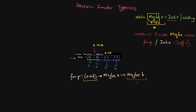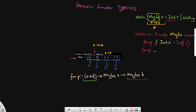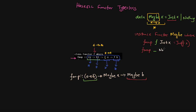Likewise, for the second case of pattern matching: fmap f Nothing = Nothing. So this is how, given the Maybe type, we make Maybe an instance of Functor.